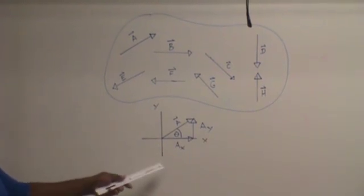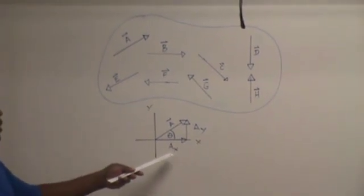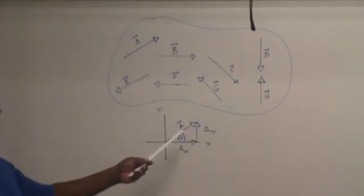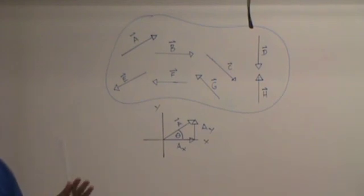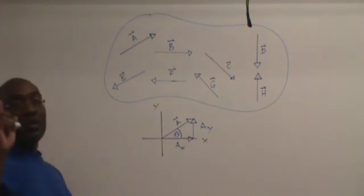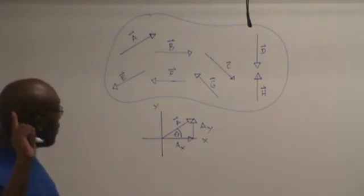If you look at this diagram, you notice that this diagram is a right triangle. In this right triangle, AX is adjacent to the angle, AY is opposite to the angle, and A is the hypotenuse. That means we're going to be using two trigonometric functions: sine function and cosine function.